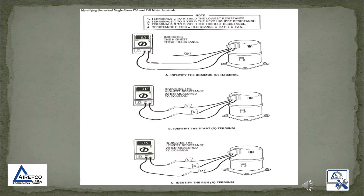In the procedures manual it shows you taking your ohmmeter and taking resistance readings on the leads of the compressor. The highest total resistance indicates the start and run windings, and so your third wire would be your common terminal. The next highest resistance shows your start winding, and then the lowest resistance when measured to common indicates your run terminal.